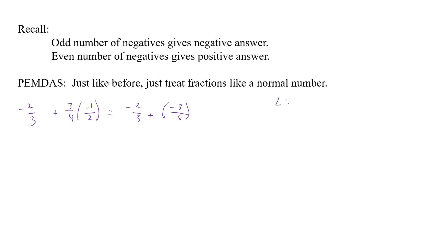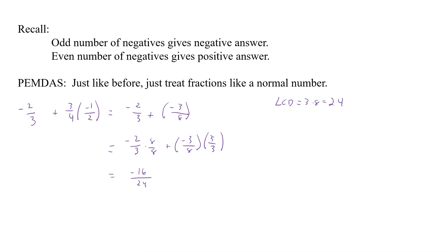So now we have negative two thirds plus negative three eighths. To add fractions, we have to find our LCD. We have a three and an eight, so our LCD is 24. We take negative two thirds times eight over eight, and negative three over eight times three over three. That gives us negative 16 over 24 plus negative nine over 24. Negative 16 plus negative nine is negative 25 over 24.